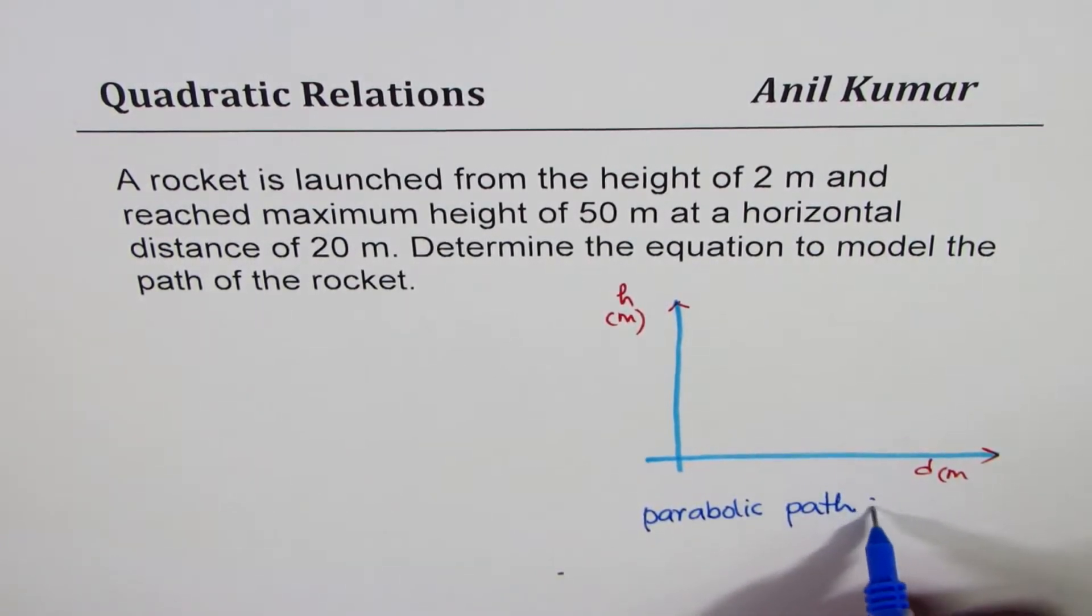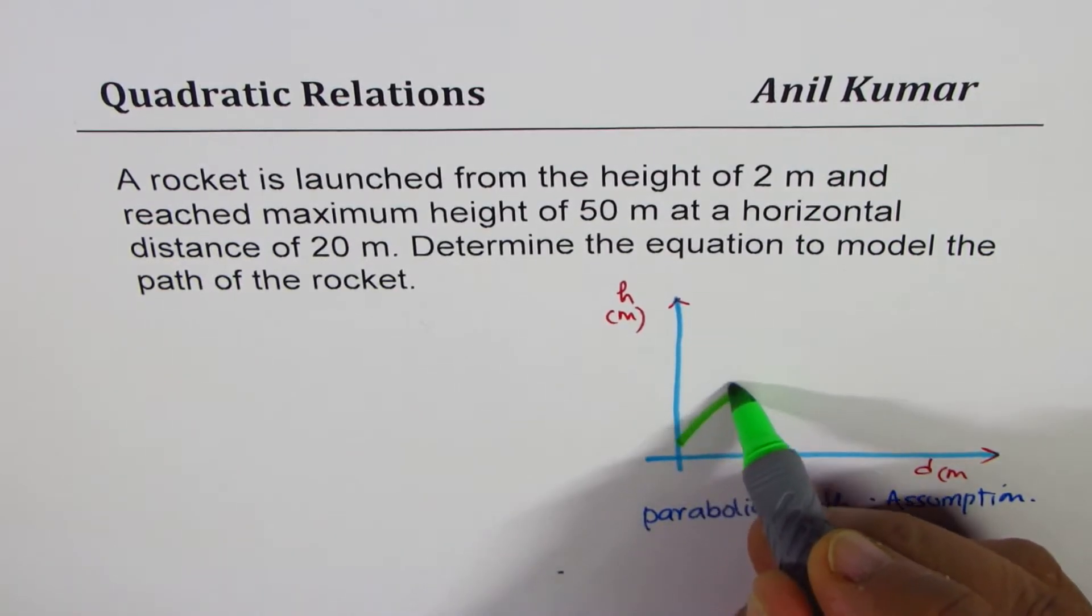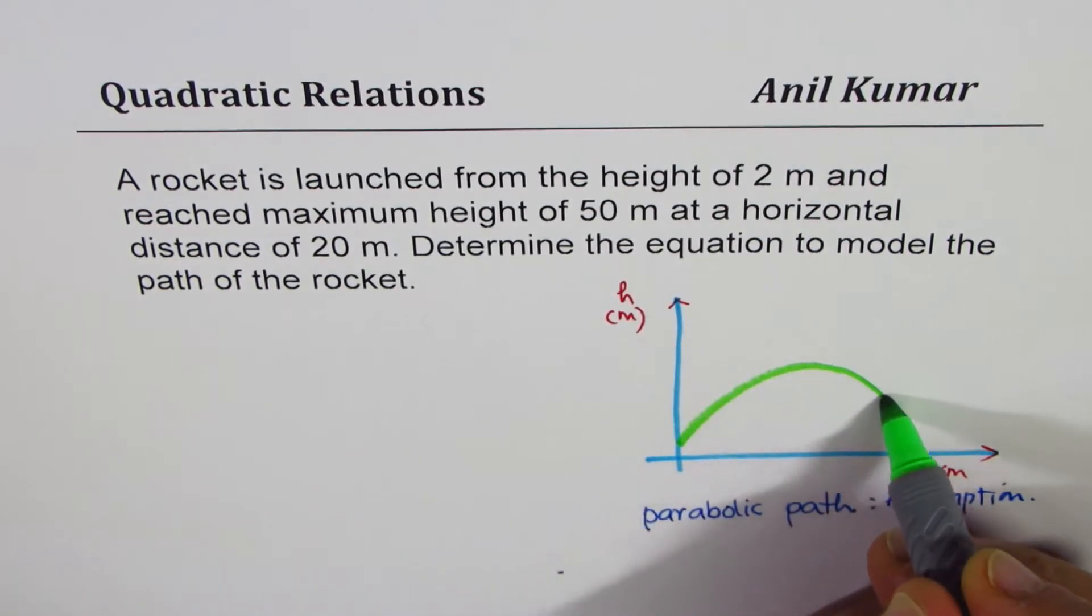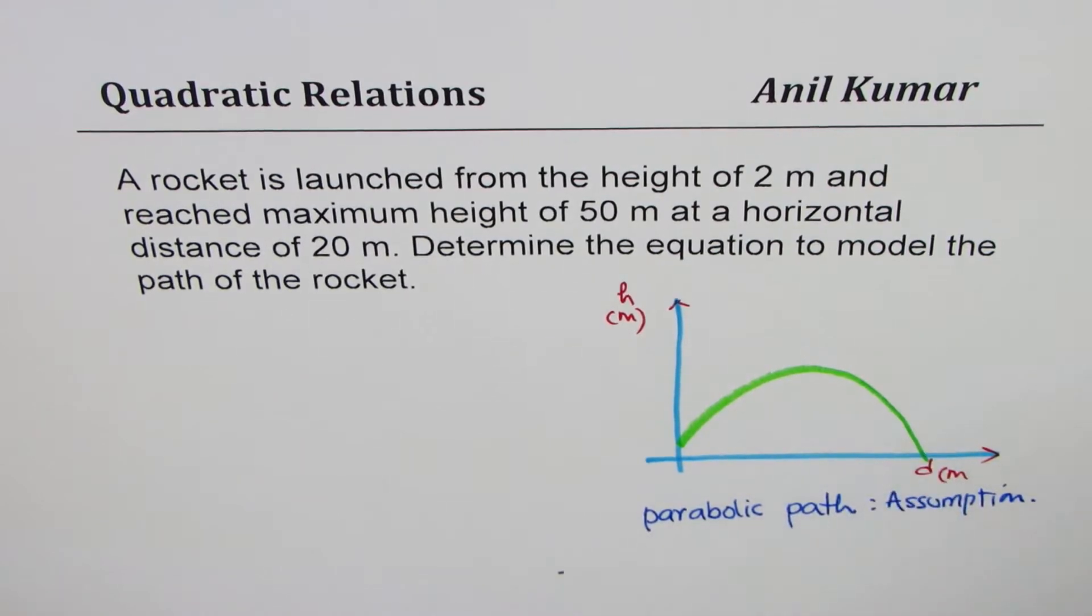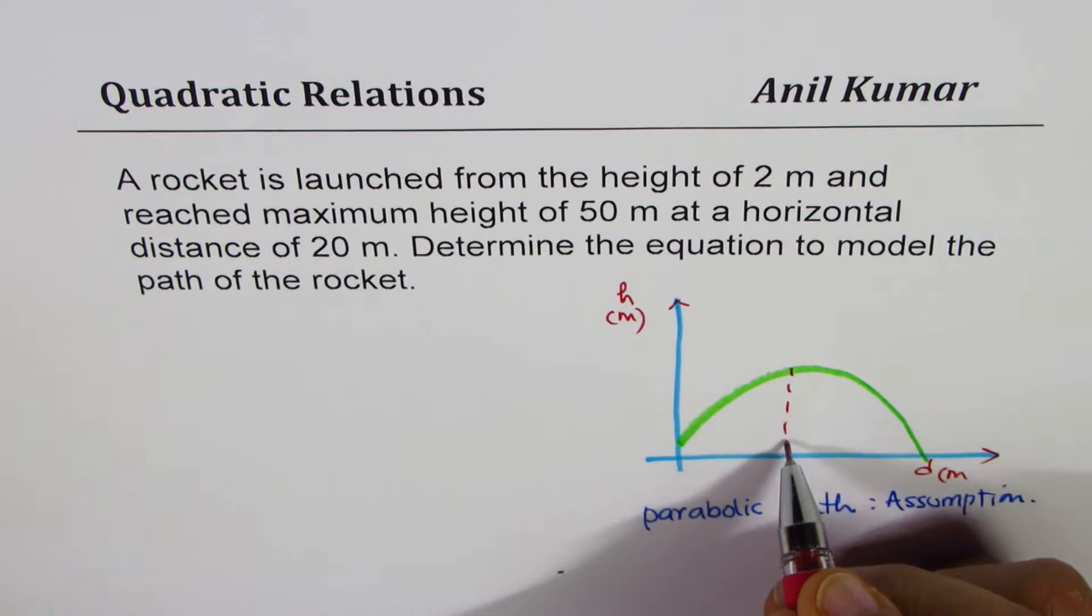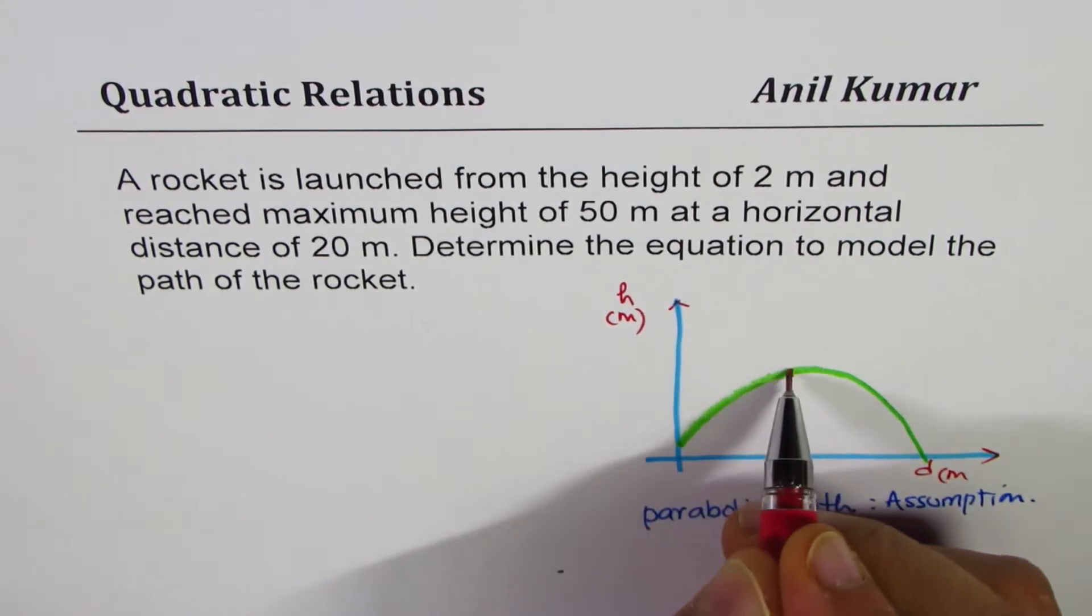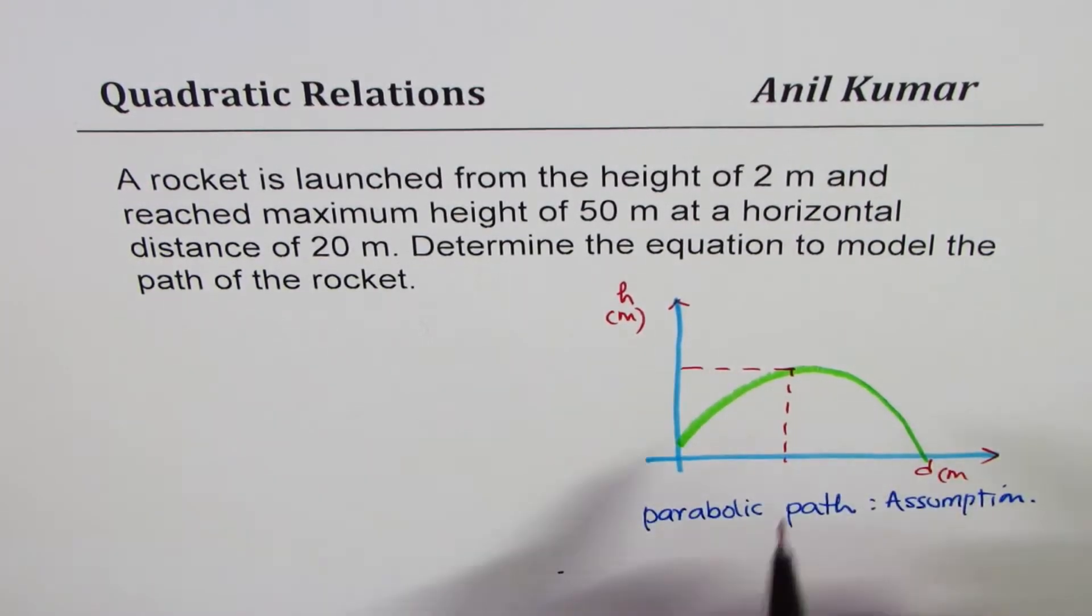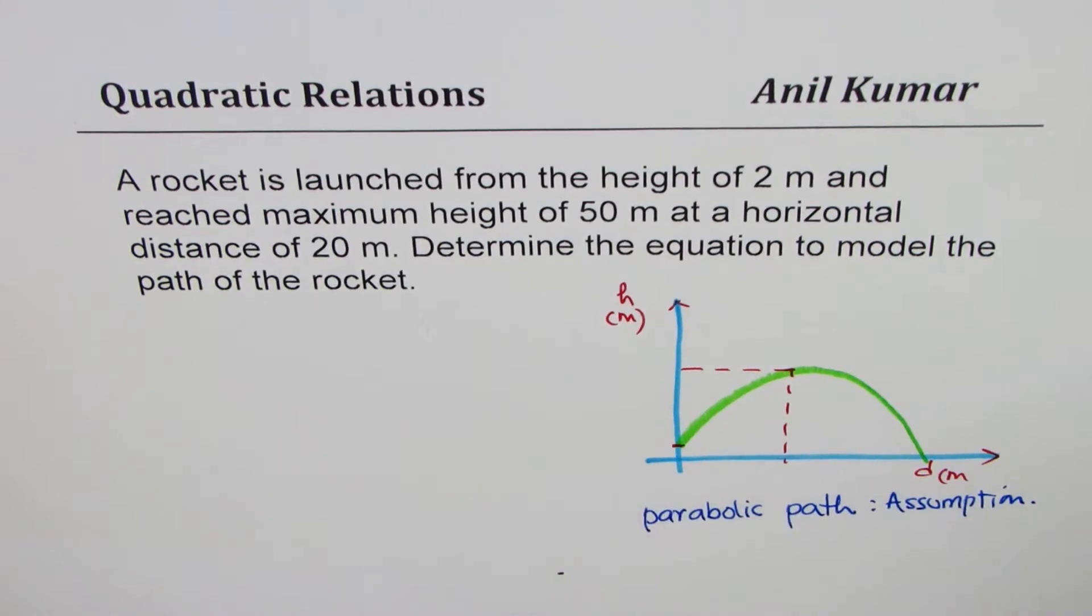Normally it is so. That is our assumption. Based on this, we can say let this be the path of the rocket. That becomes the path of the rocket. Let this be the maximum—it doesn't look like it, but anyway, let's say this is the maximum and that is the starting point.